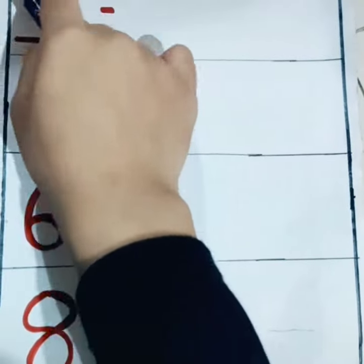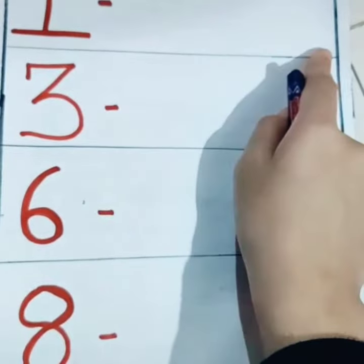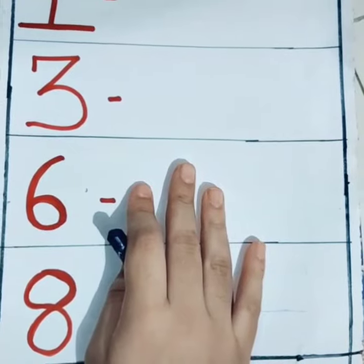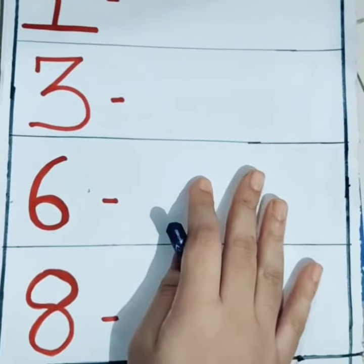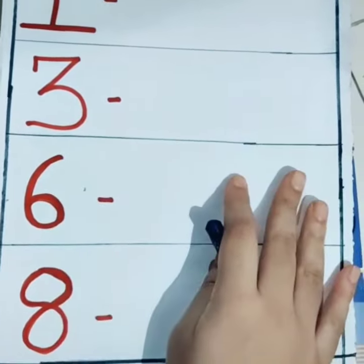Today, we are going to learn how to draw dots for the given numbers. For doing this, the child should know the number counting from at least 1 to 10.